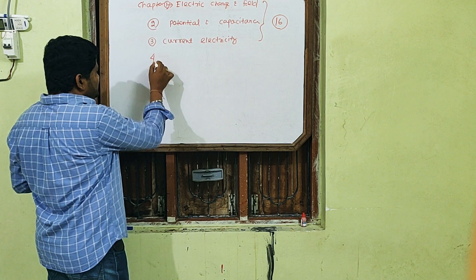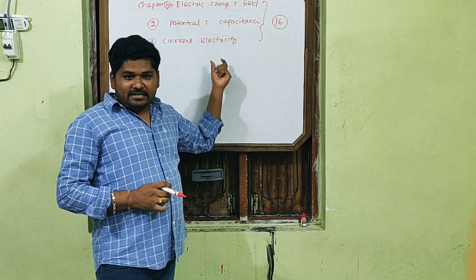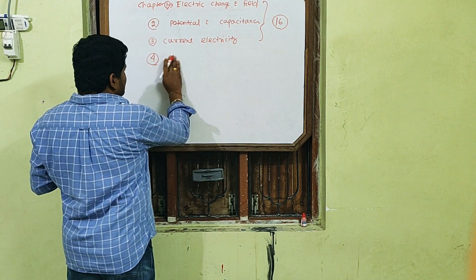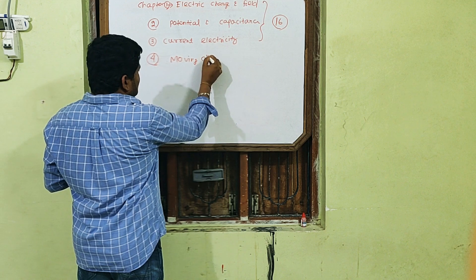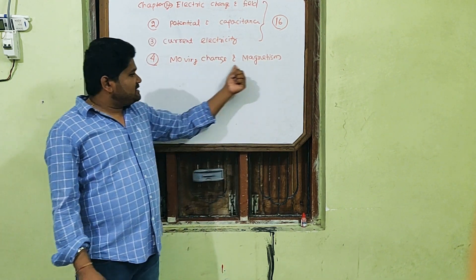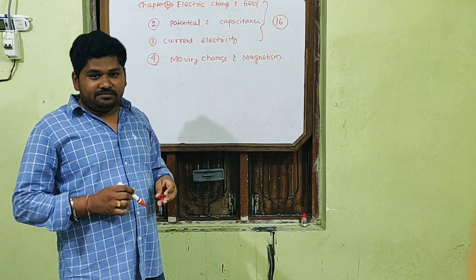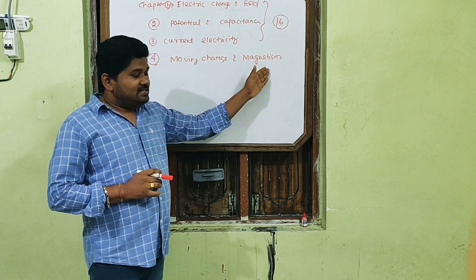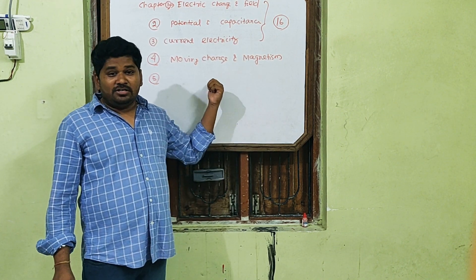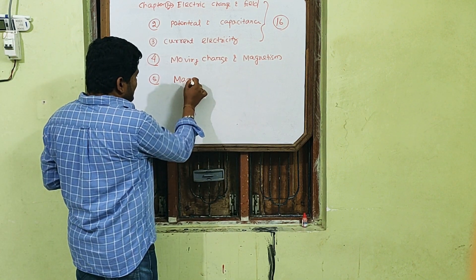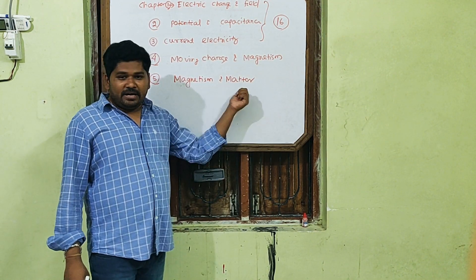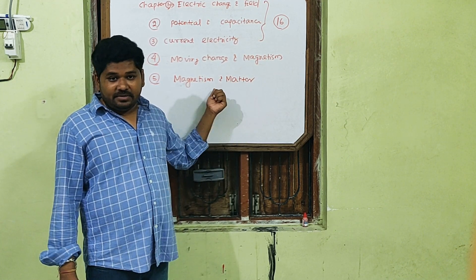Then we come to Chapter 4. Now we move from Electricity to Magnetism. Chapter 4 is Moving Charge and Magnetism — Electromagnetism. Here we discuss how when current passes through a conductor, the conductor behaves like a magnet. Then Chapter 5 is Magnetism and Matter, where we discuss the original magnet — how the Earth behaves like a huge magnet, geomagnetism, and related topics.